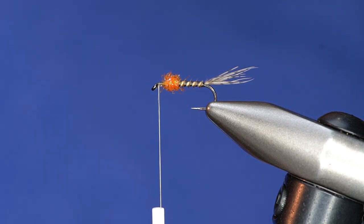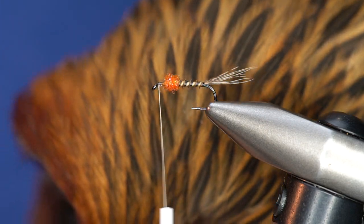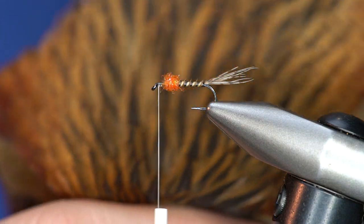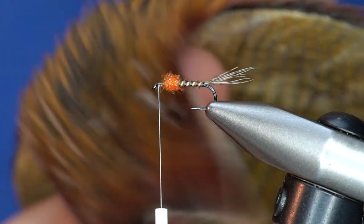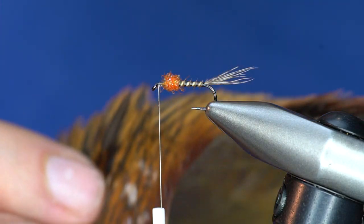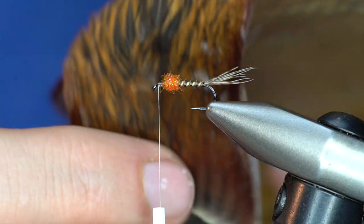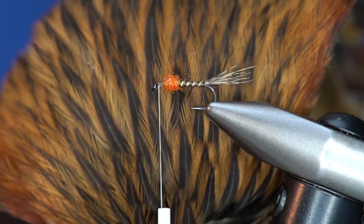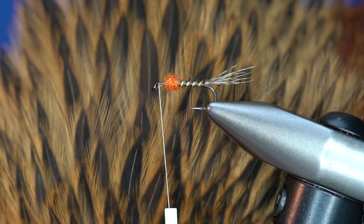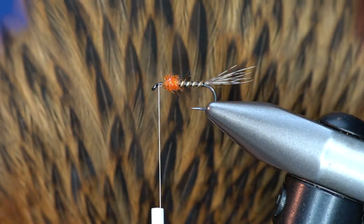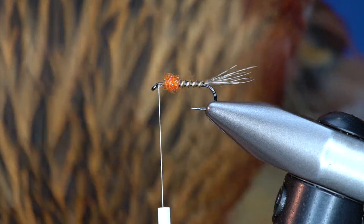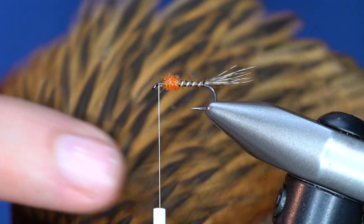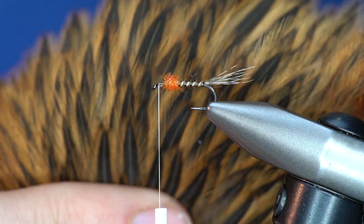So for the soft hackle, this is probably one of my favorite newish products that I've been using from Whiting, and that's a 4B Hen Cape. So being that it's a cape you'll see a wide variety of sizes of feather as opposed to a saddle which is a little bit more uniform. And it's a non-genetic, it's not bred to be a dry fly, so the fibers here are soft. They're not as stiff as a dry fly hackle.